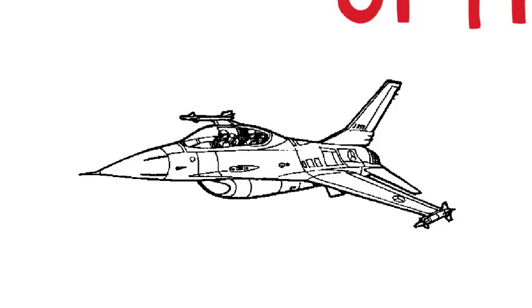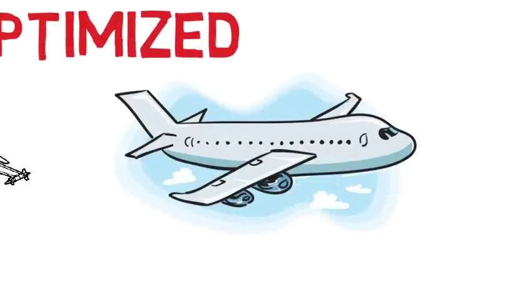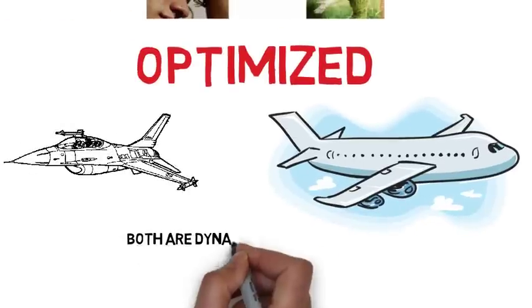For example, F-16s are dynamically unstable, which makes them more maneuverable. While most airliners are statically stable. And generally, you always want to be dynamically stable.